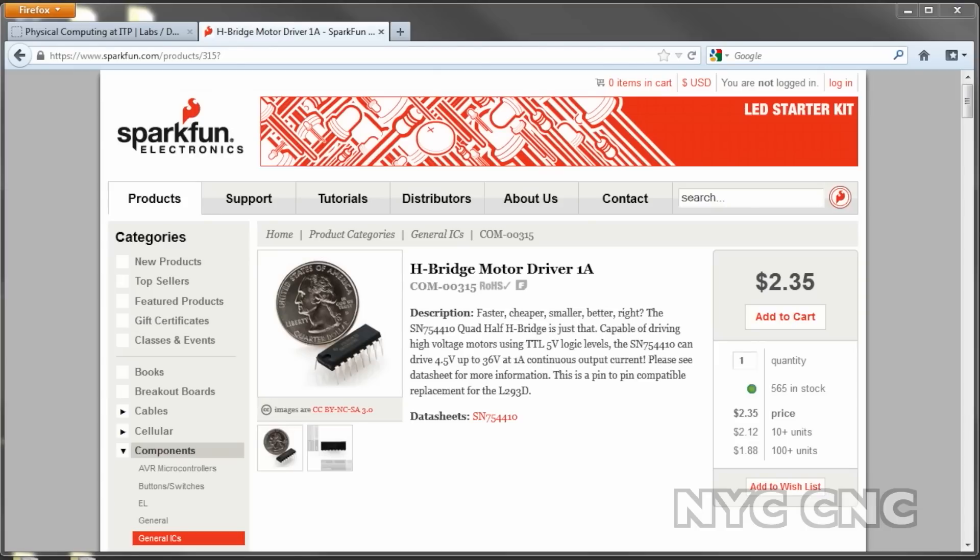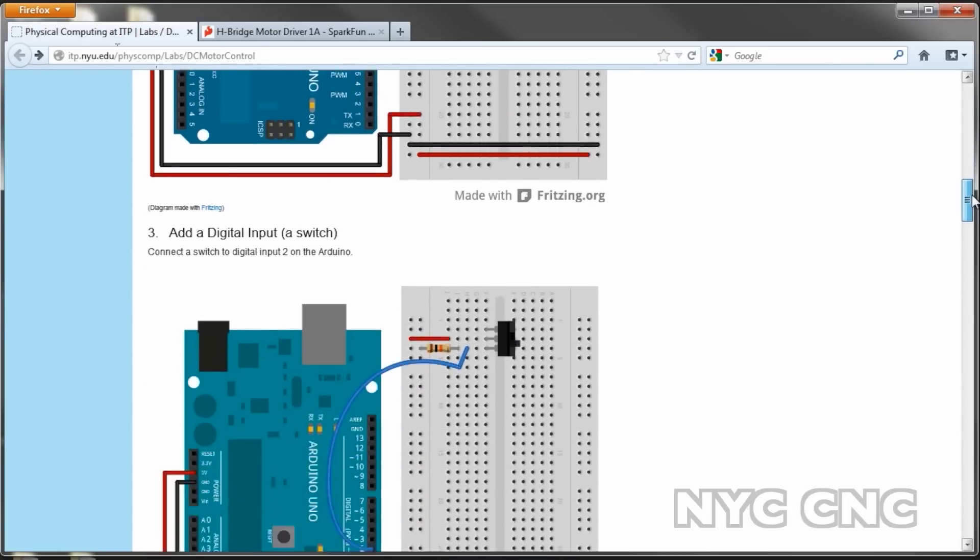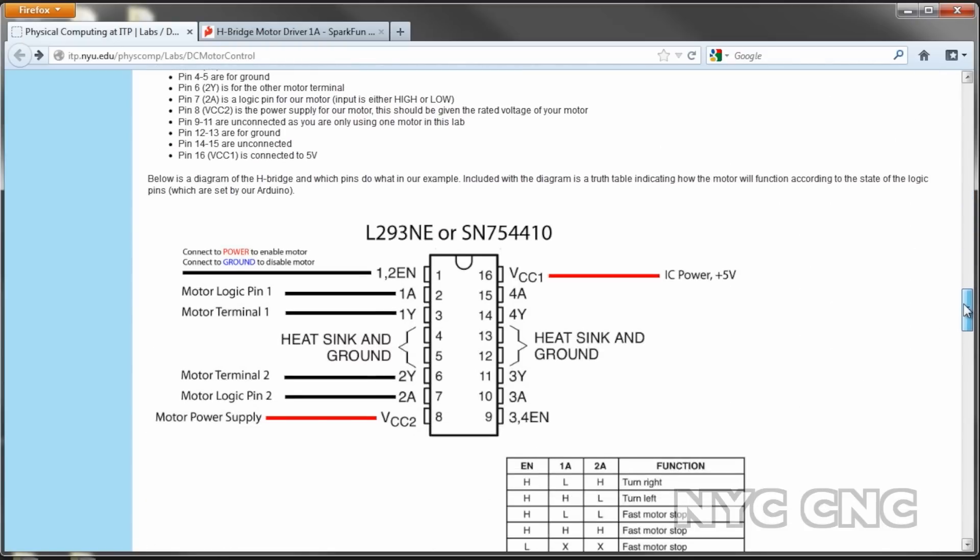The H-bridge chip we're going to use is from SparkFun. You can see it right here and there's a great tutorial from NYU's ITP program that I'm going to follow along here. You can follow along more closely on the website on your own. Let's take a closer look now at how the chip is set up.